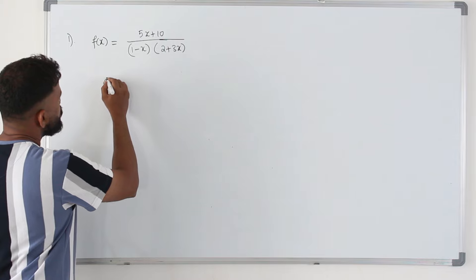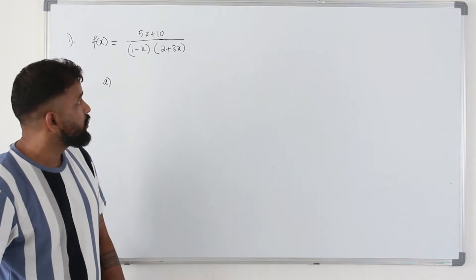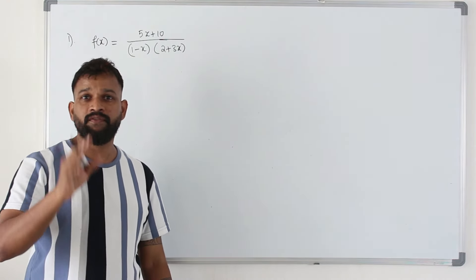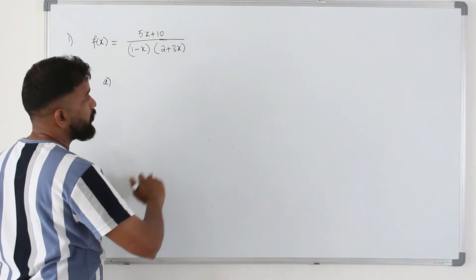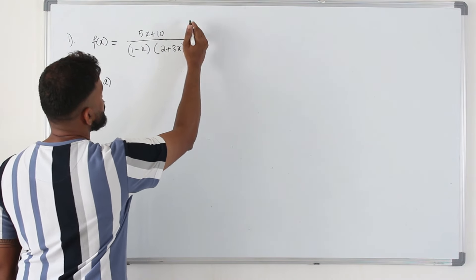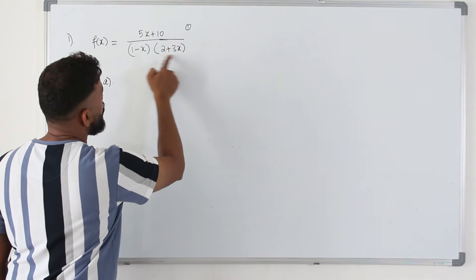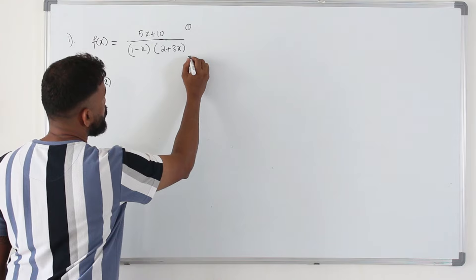So here part a, we need to write this as a partial fraction. In partial fraction, the first most overlooked step is to check whether it's proper or improper fraction. Look at the highest power of x. It's 1 here. Here after opening the bracket, the highest power would be 2.